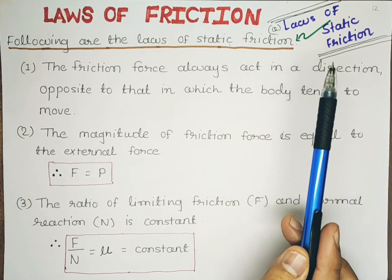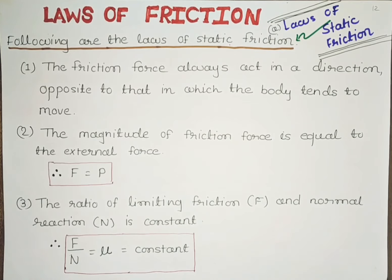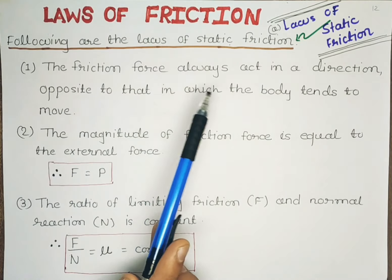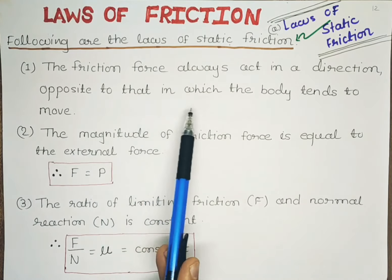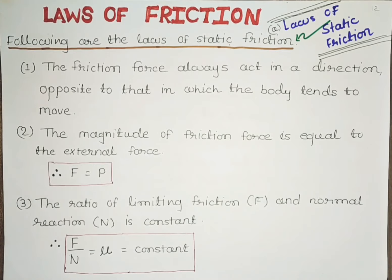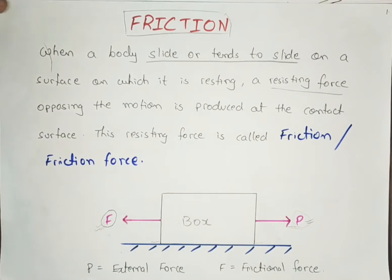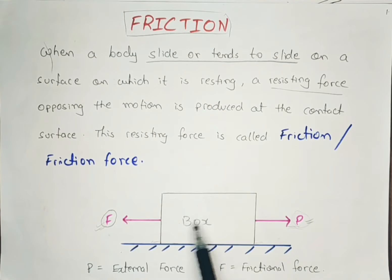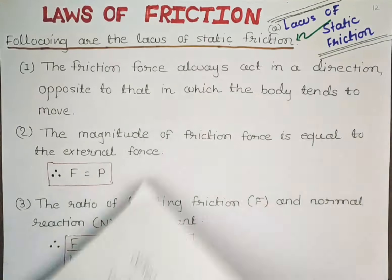We have five laws of static friction. The first is: the friction force always acts in the direction opposite to that in which the body tends to move. As we understood in the first lecture, friction force is always opposite to the external force. So if the external force is acting towards the right, the frictional force will always act towards the left.